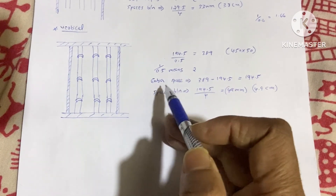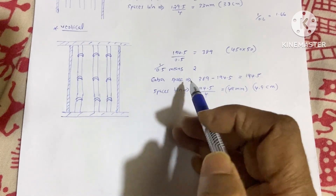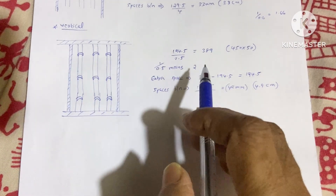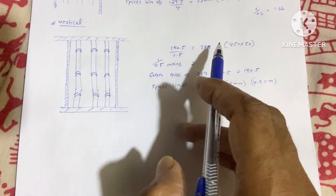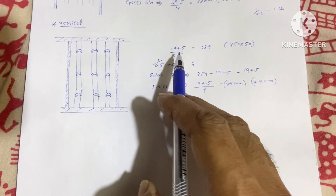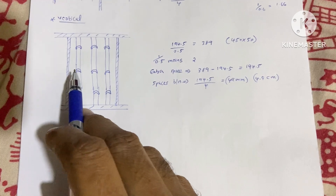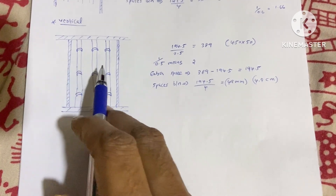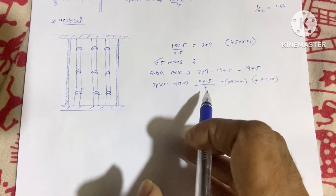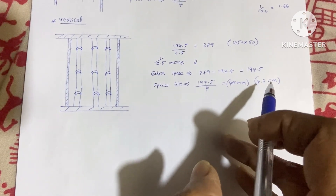The extra space available in the vertical calculation is the difference between 389mm and 194.5mm, which equals 194.5mm. With 4 gaps present, dividing 194.5mm by 4 gives 49mm — that is 4.9cm of spacing per gap between cables and cable tray.